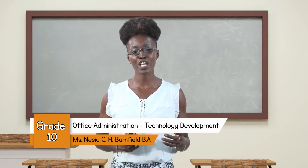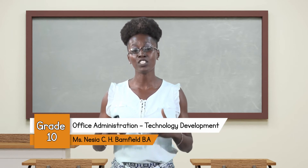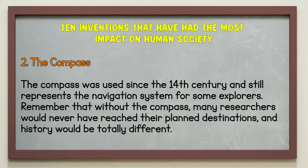Here is something to think about: great minds often tend to change the whole world with just one invention or the improvement of another. Ten inventions that have had the most impact on human society. Number one: the wheel — often regarded as the invention that paved the way for all other innovations created throughout history. Number two: the compass — used since the 14th century, it still represents the navigation system for some explorers. Without the compass, many researchers would never have reached their planned destinations and history would be totally different.